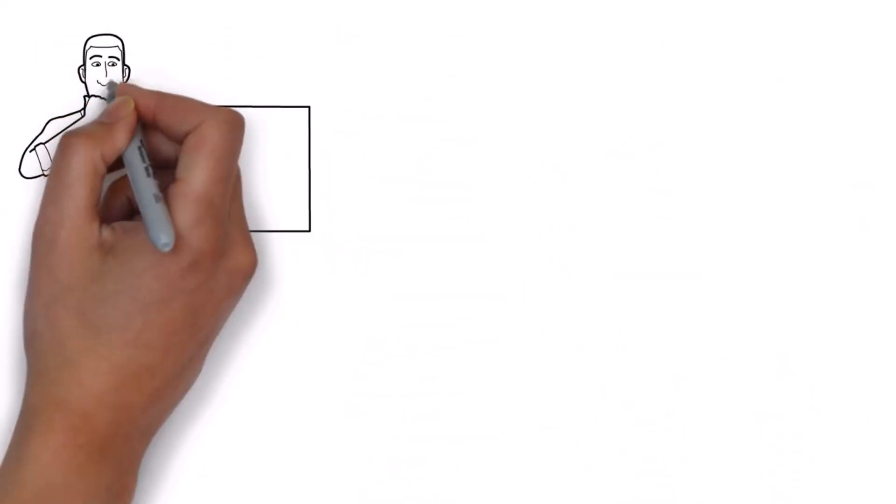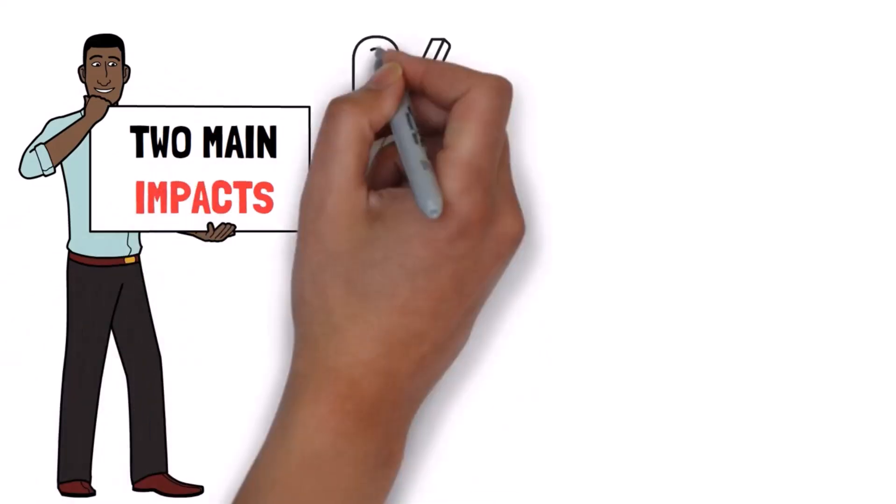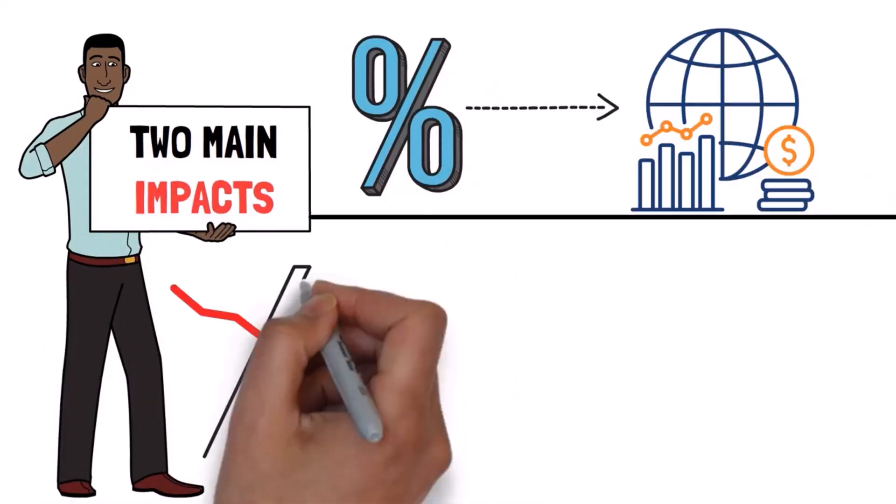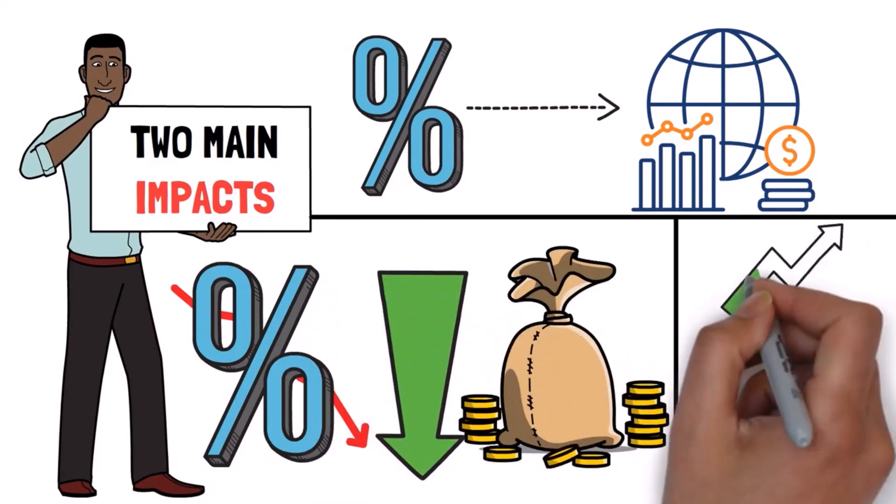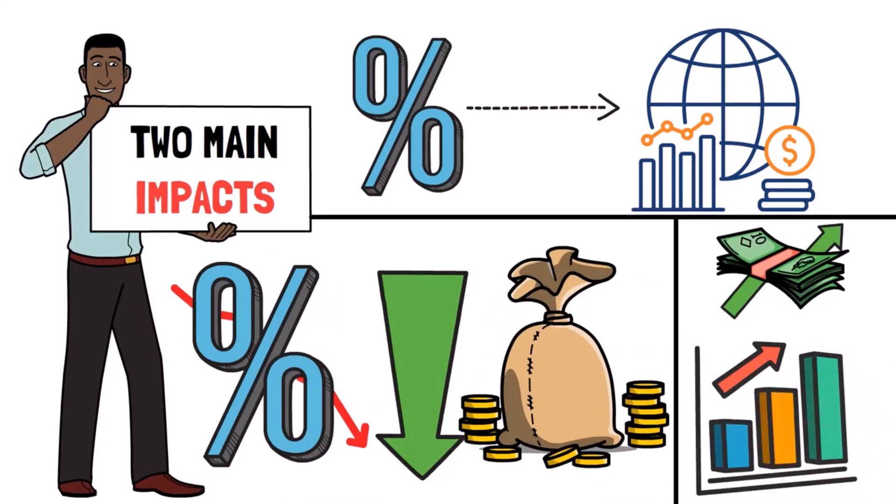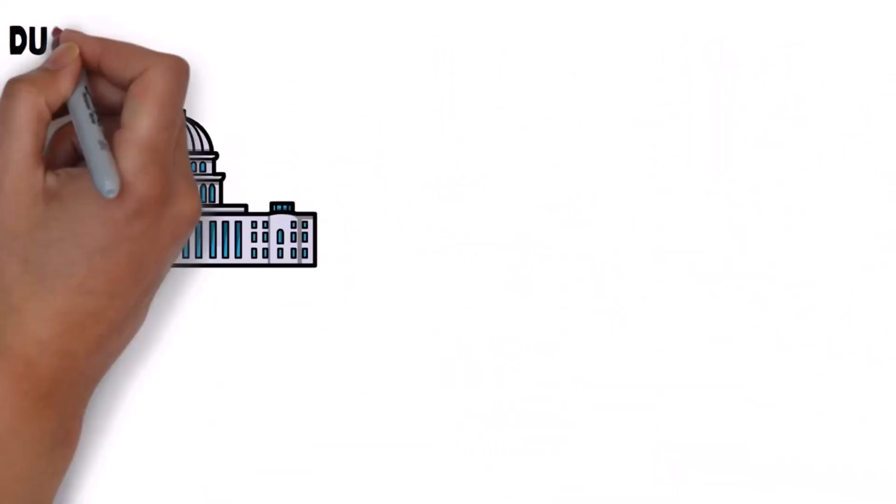First, we need to understand the two main impacts that interest rates can have on the global economy. Lowering interest rates makes borrowing money cheaper, increases spending and accelerates the economy, which is what the Fed did during the closures.